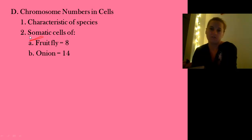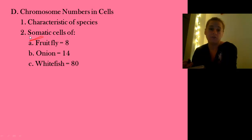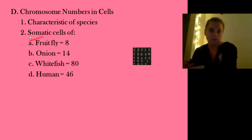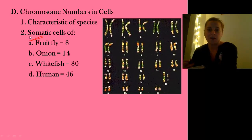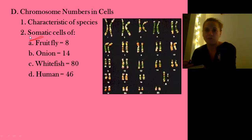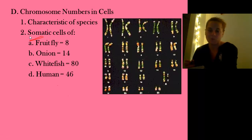Here are some fun facts: onions have 14, white fish — which we're going to look at in the lab — have 80, and humans have 46. This is the karyotype for a human; this one happens to be a boy. I'll let you think for a bit about how you might figure out why I know that.